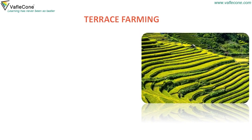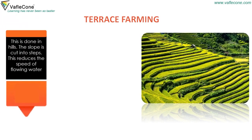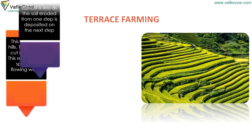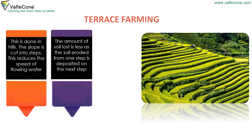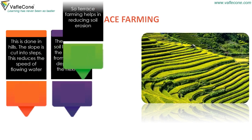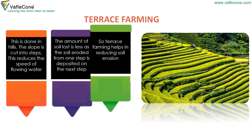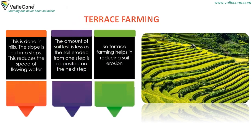Terrace farming: This is done in hills. The slope is cut into steps, which reduces the speed of flowing water. The amount of soil lost is less as the soil eroded from one step is deposited on the next step. So terrace farming helps in reducing soil erosion.